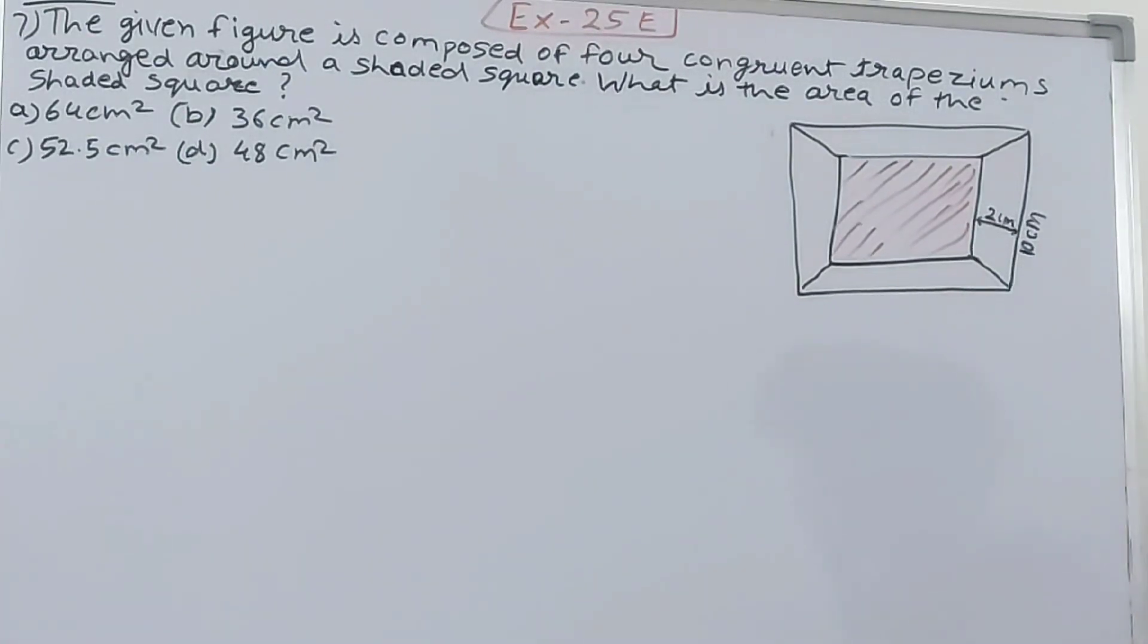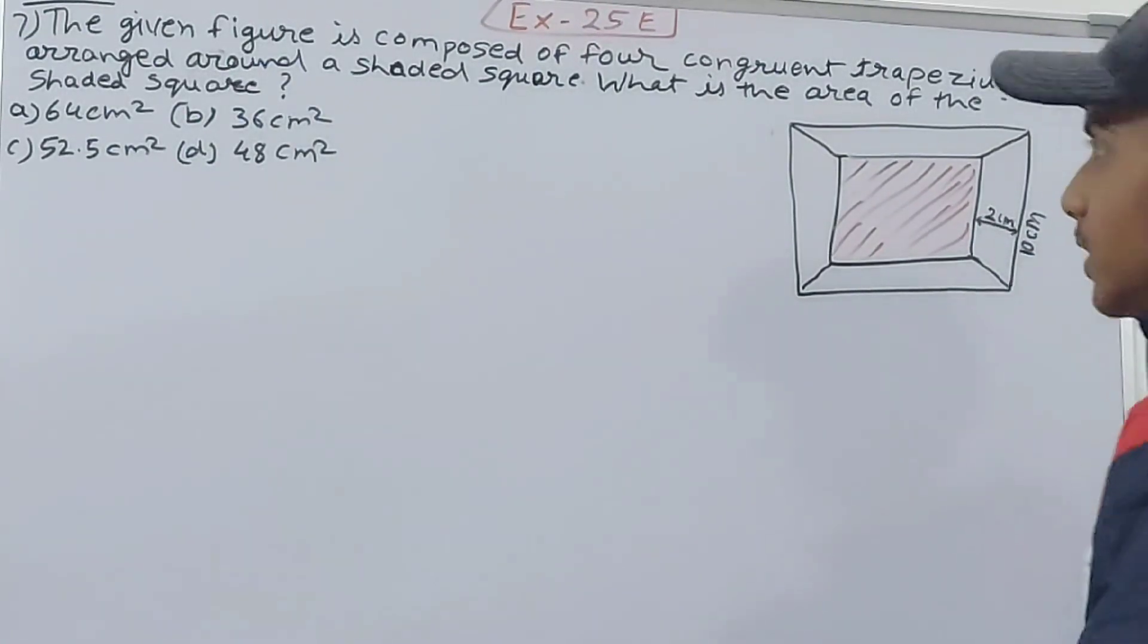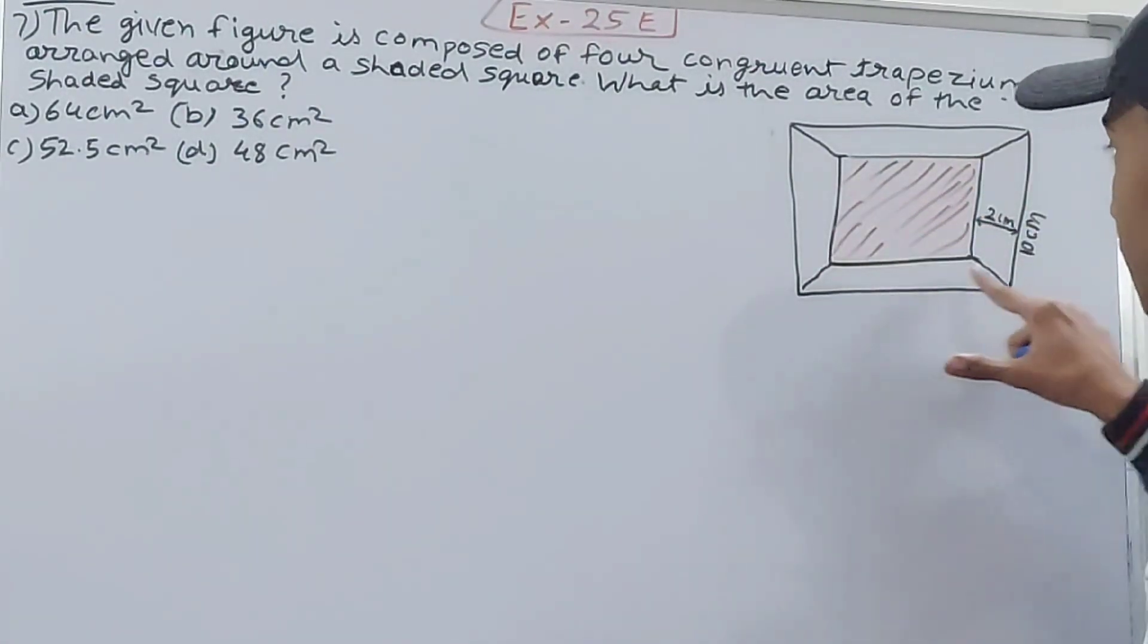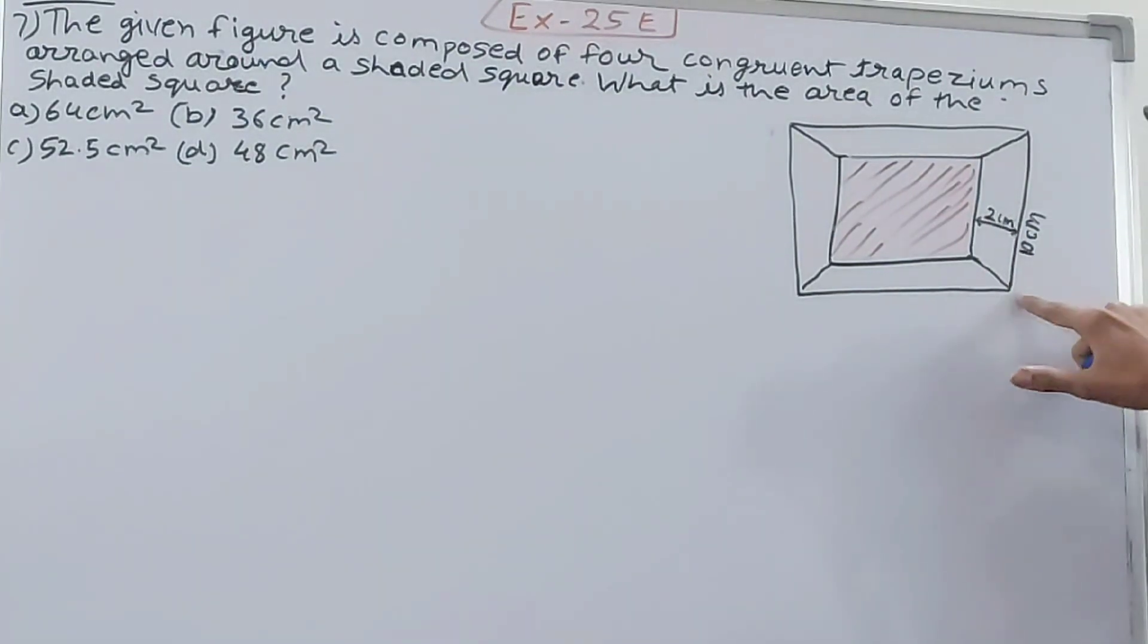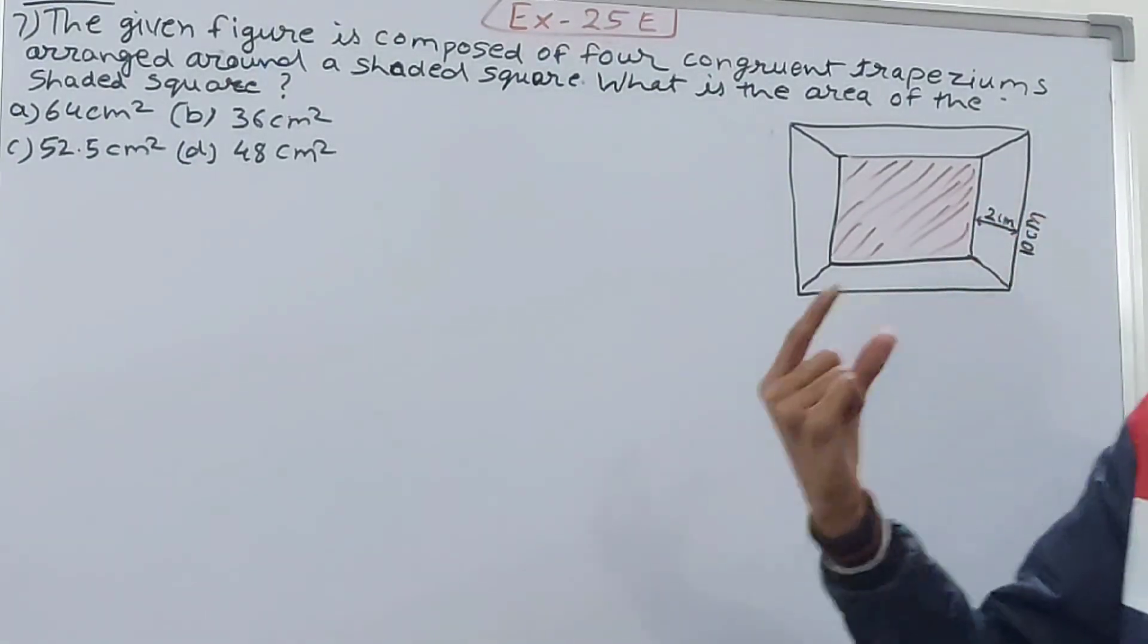Congruent means the same, so the dimensions and everything is the same. Now it is asking what is the area of this shaded square. One side is 10 centimeters and the height of the trapezium is 2 centimeters.